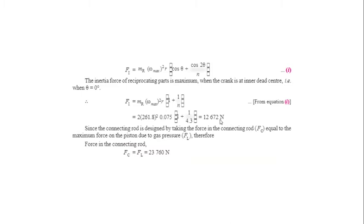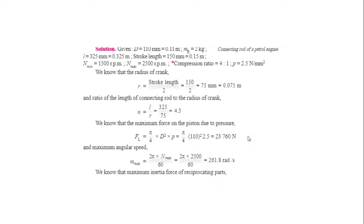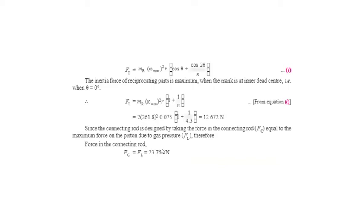Next, we calculate the force in the connecting rod. Since the connecting rod is designed by assuming the force in the connecting rod equals the maximum force on the piston, we take F_c = F_l = 23,760 N. That is, the load acting on the piston equals the load acting on the connecting rod.